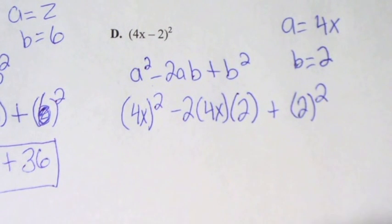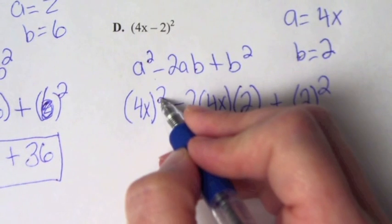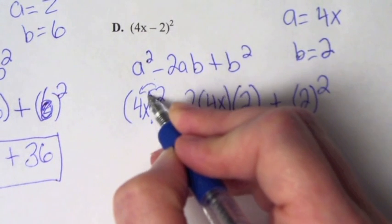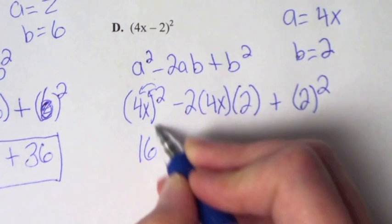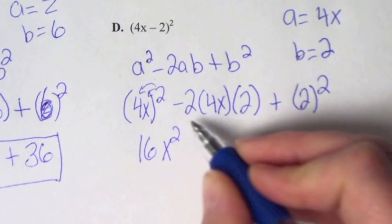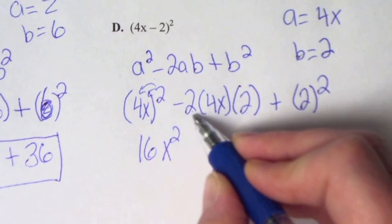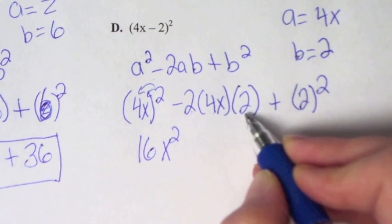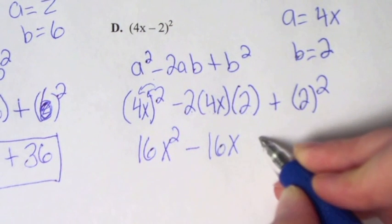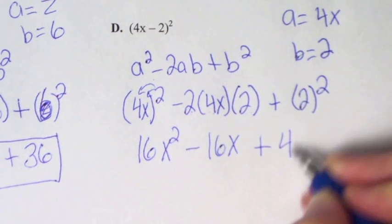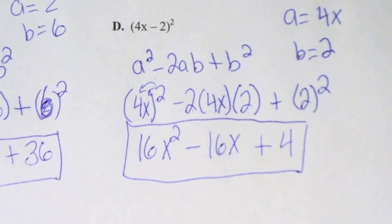Then plus 2 squared. Now simplify: this squared distributes to both the 4 and the x. So 4 squared is 16, giving 16x squared. For the middle term, 2 times 4 times 2 is 16, giving minus 16x. And 2 squared is 4, giving plus 4. That is how we square a binomial.